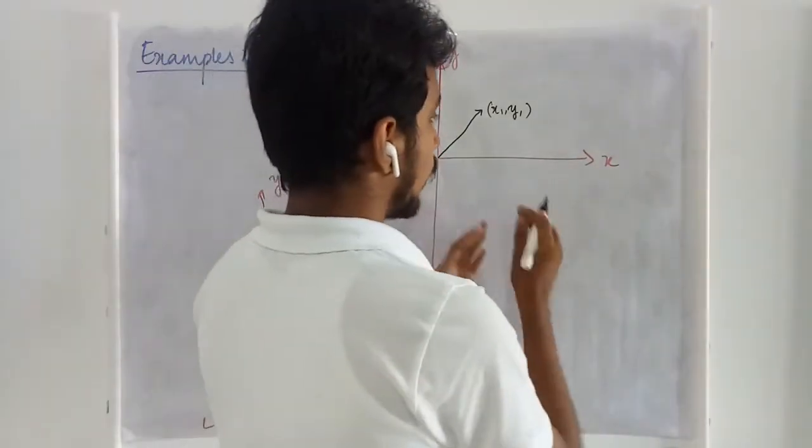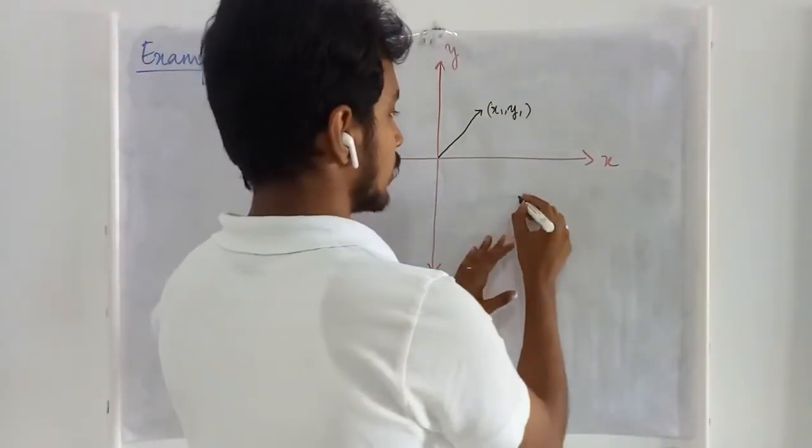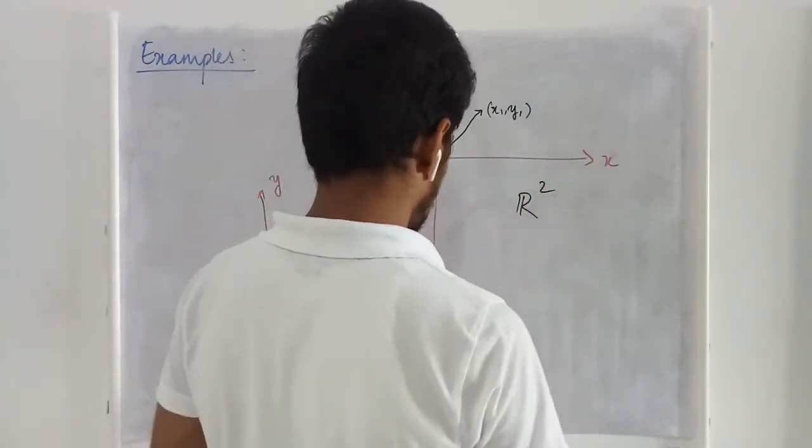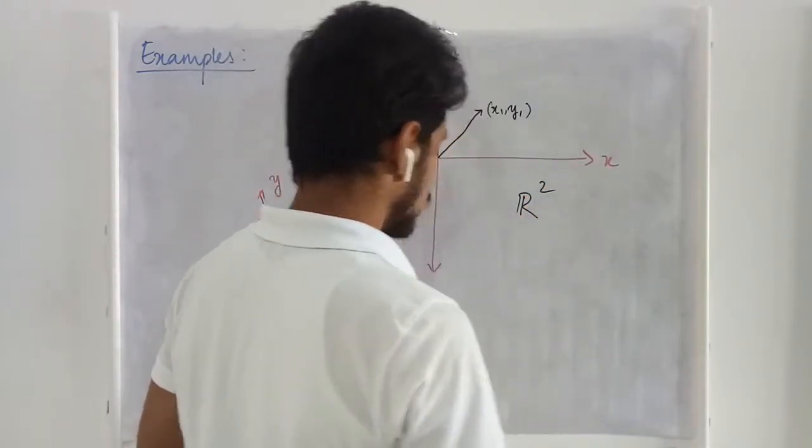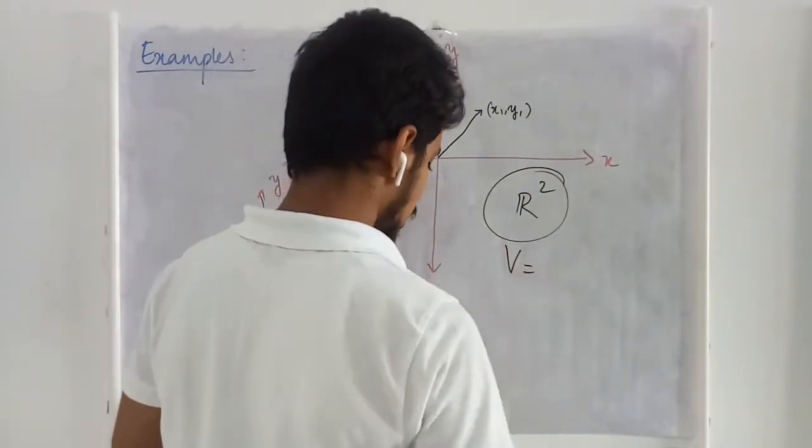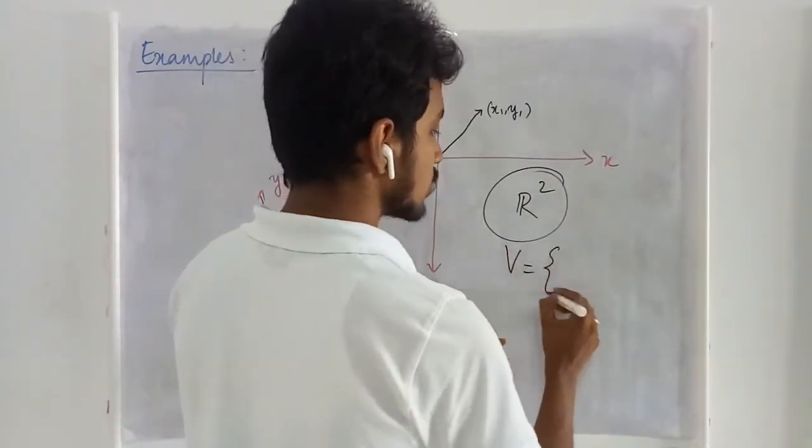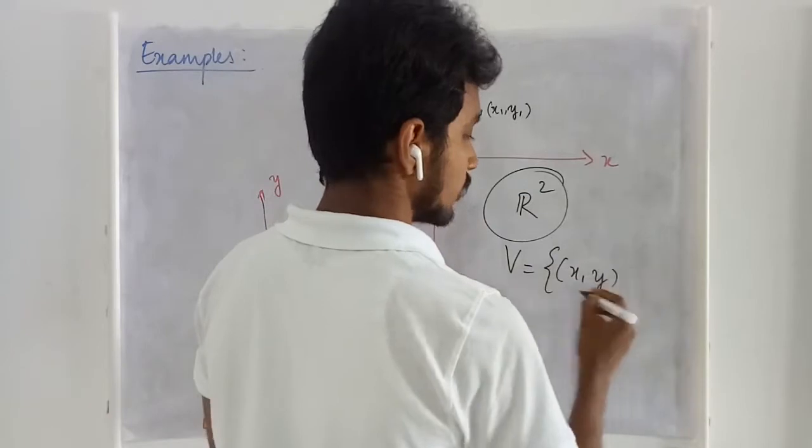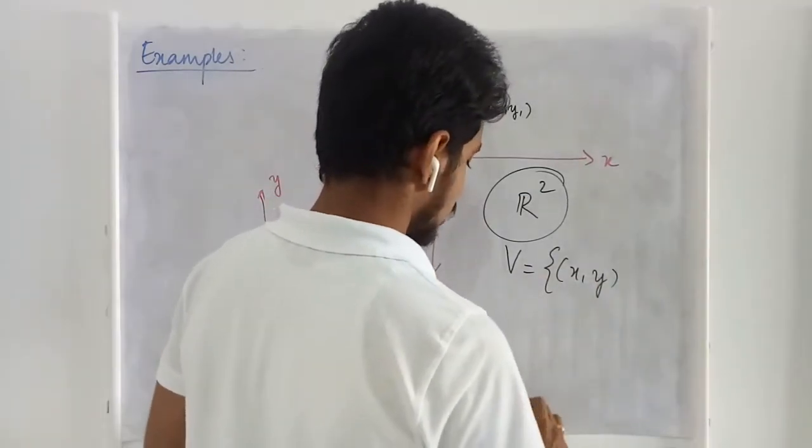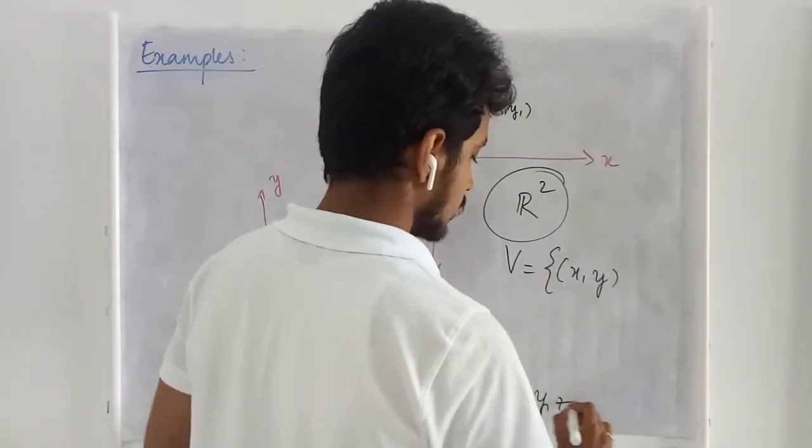So while dealing this in notation we can write this to be R2 and this to be R3. This is a non-empty set V. This is going to consist the points of this form. Here it is going to consist points of this form.